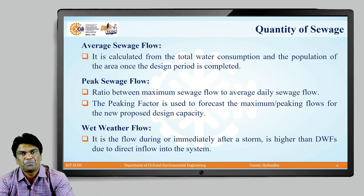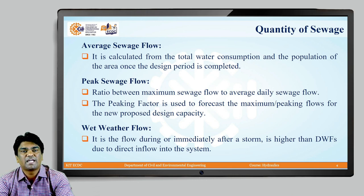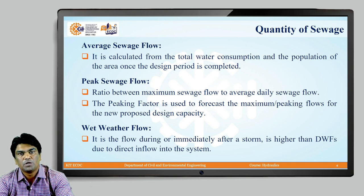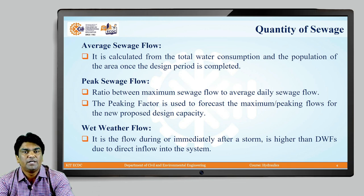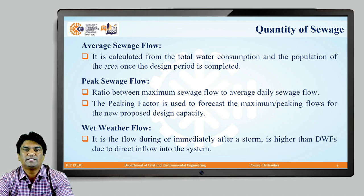The second flow term is peak sewage flow, which uses the peaking factor — a term used to forecast maximum or peaking flows for new proposed design capacity. It is the ratio of maximum sewage flow to average daily sewage flow. Wet weather flow is the flow during or immediately after a storm and is higher than dry weather flows due to direct inflow into the systems.